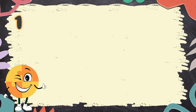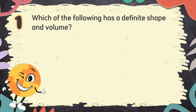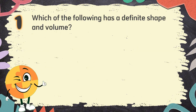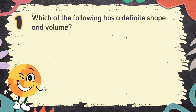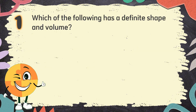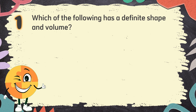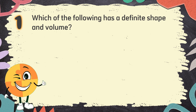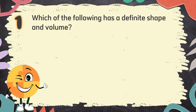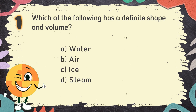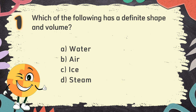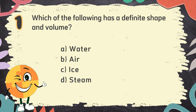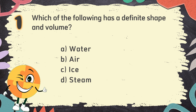Number 1. Which of the following has a definite shape and volume? The choices are: A. Water, B. Air, C. Ice, D. Steam.